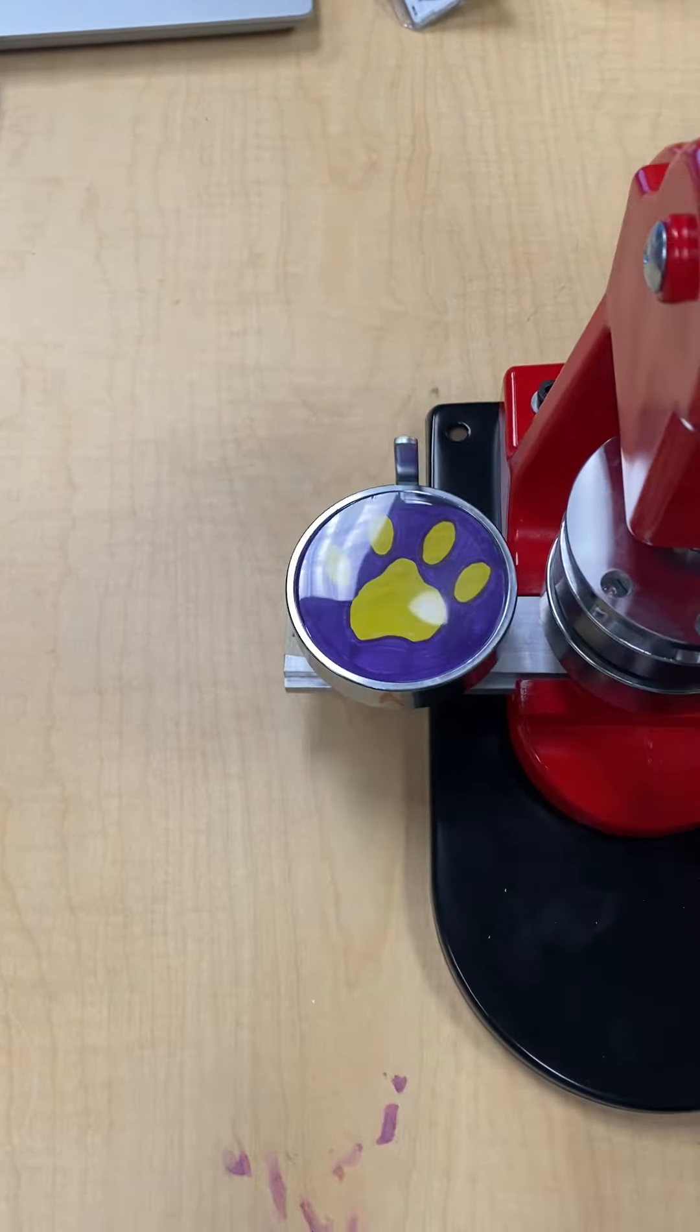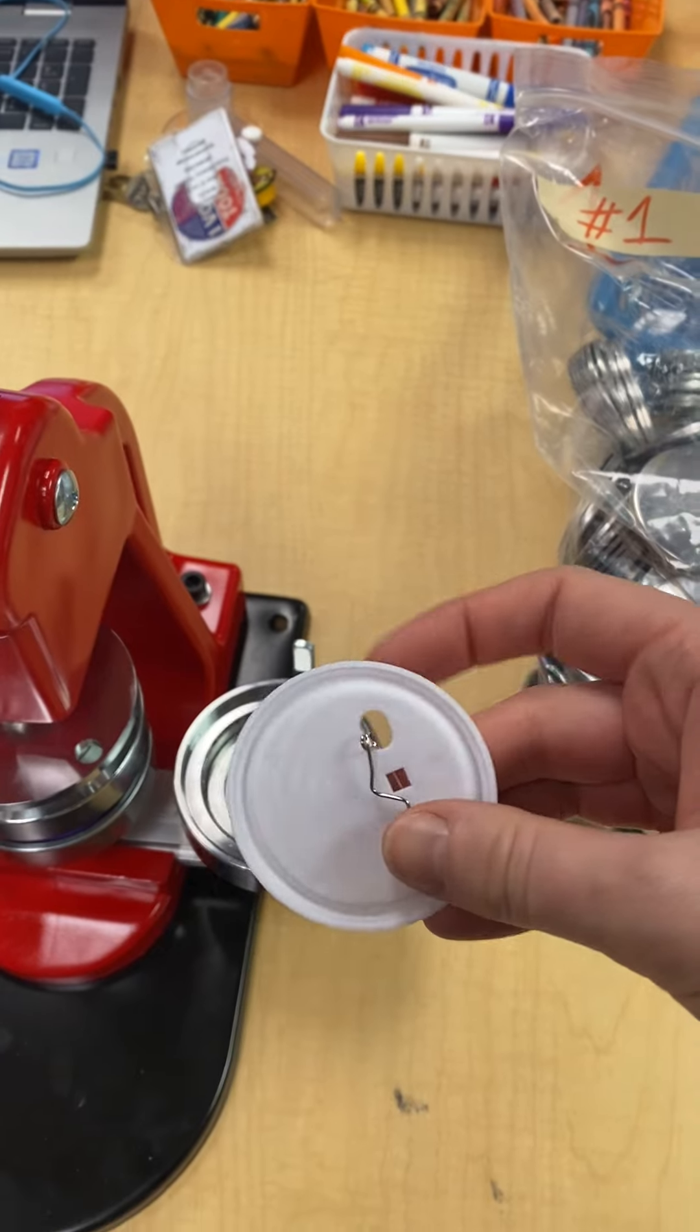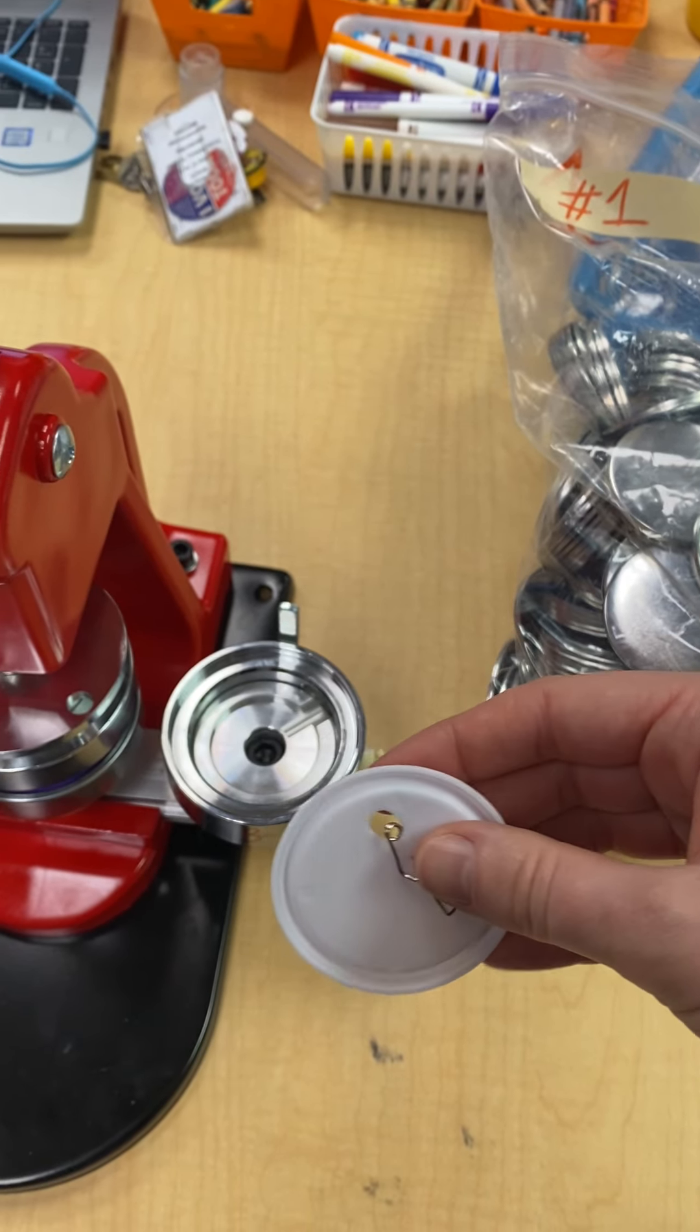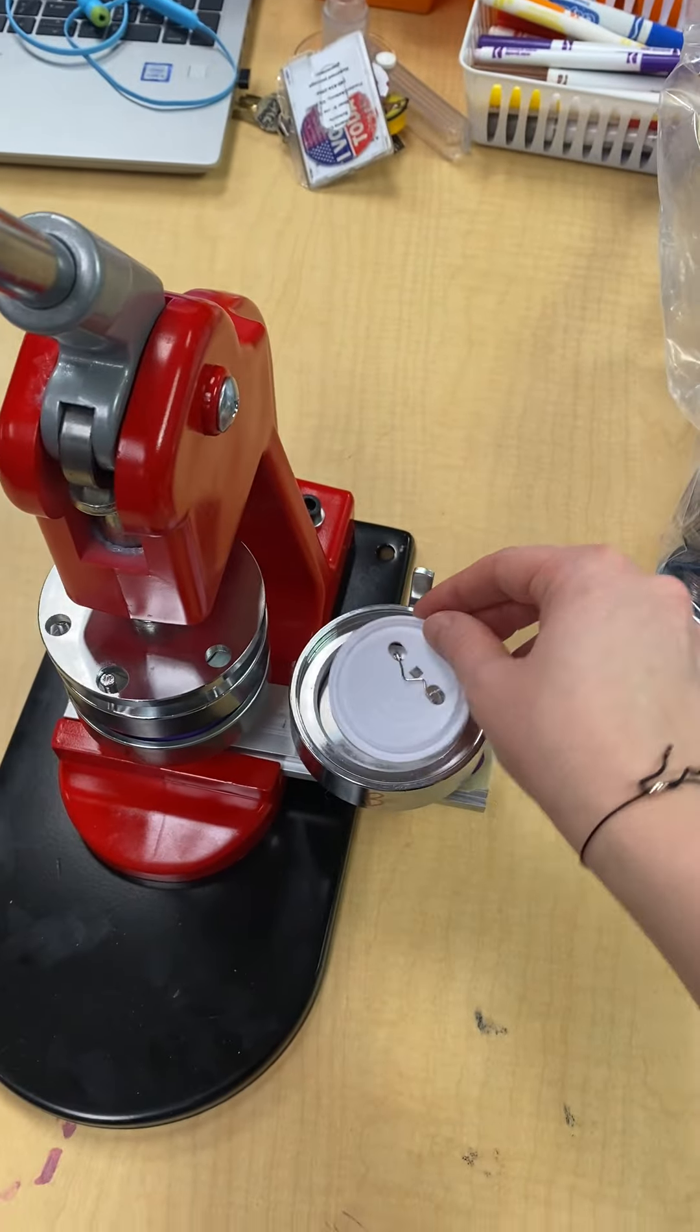Then we're gonna slide it on over to the other side here to where it's the B side. And on B side, this is where we're going to go to bag number four and take the backing here.